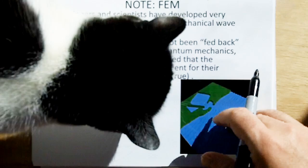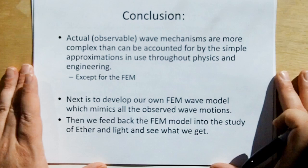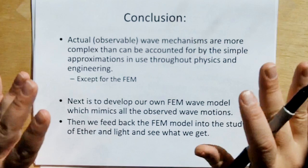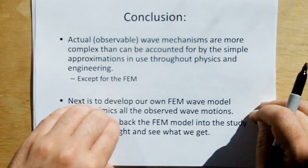All right, so conclusion. Actual wave phenomena are more complex than can be accounted for by the simple approximations used throughout physics and engineering, except possibly for the finite element models. So our next job is to develop our own finite element wave models, which mimic all the observed wave motions and the divergent flows. And then we're going to feed this back into the ether models and the light models to see what we can get.